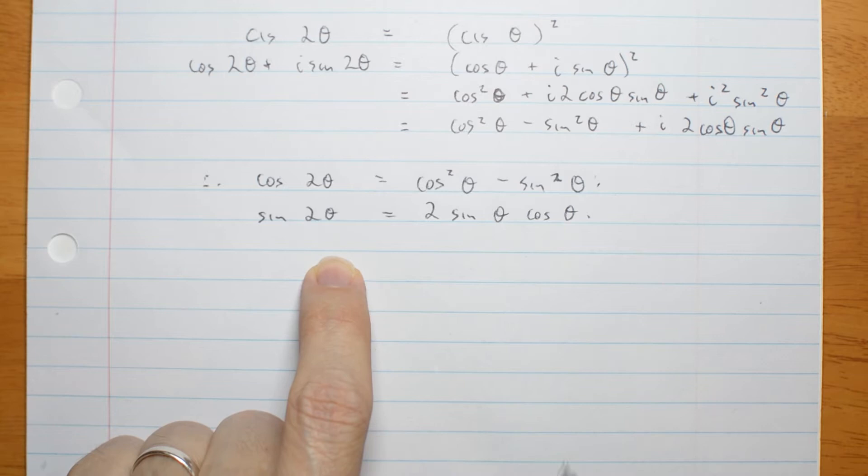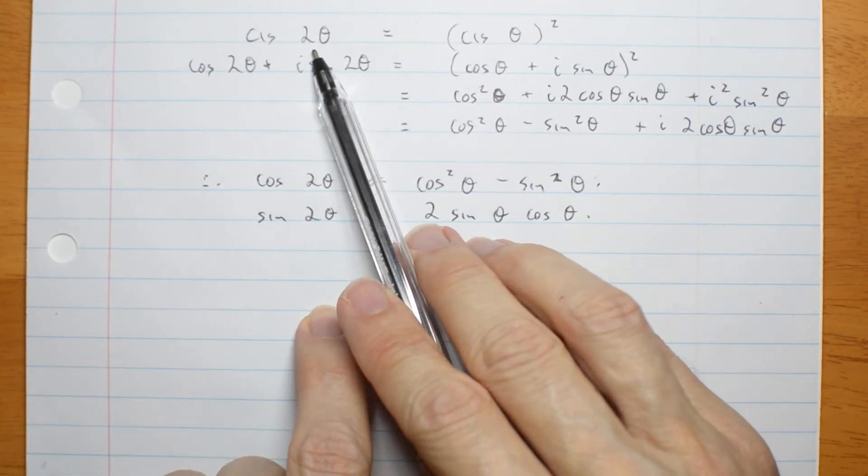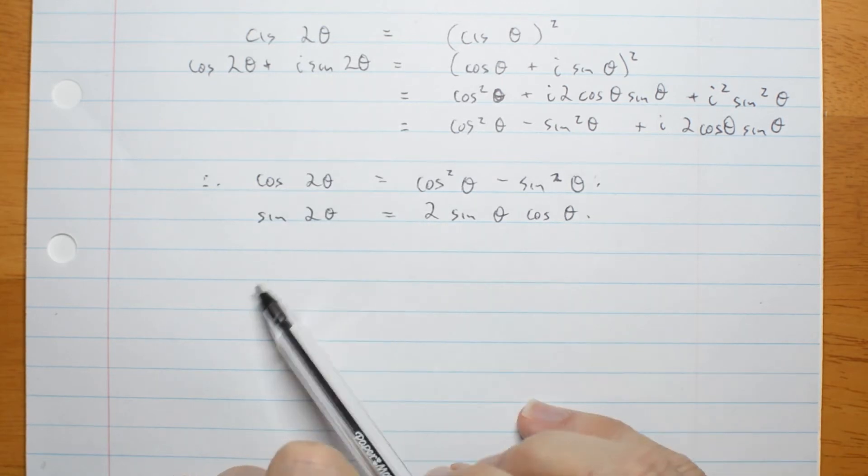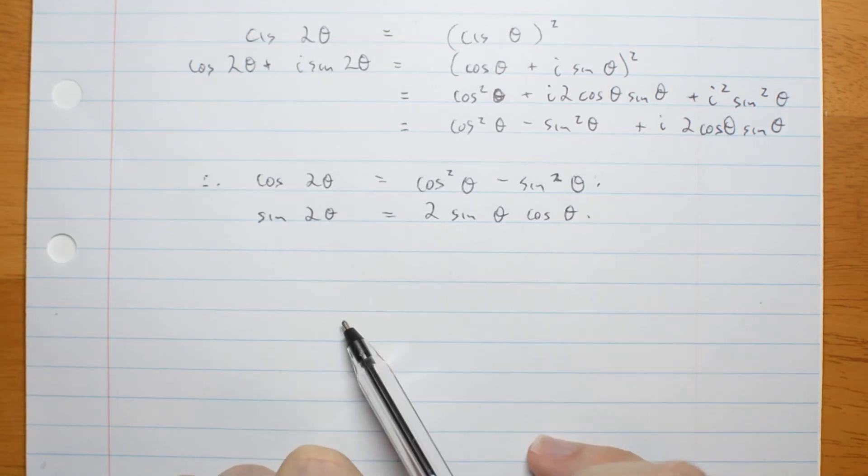Try for yourself. What happens if I put 3 theta or 4 theta here? Can you get me trigonometric identities for cos 3 theta and cos 4 theta? And sine 3 theta and sine 4 theta? Have a go.